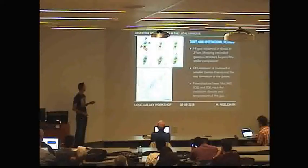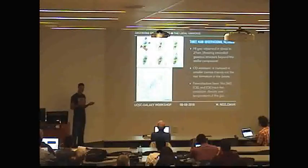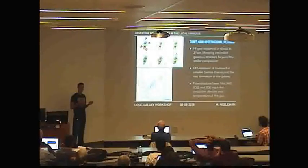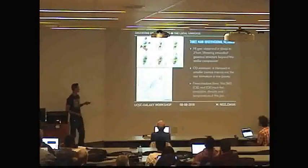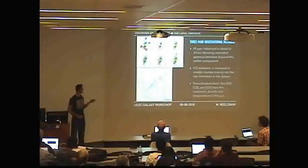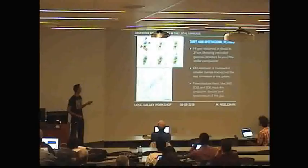A third method of looking at gas in low-redshift galaxies is using fine structure lines — things like nitrogen II, carbon II, oxygen I. There's a bunch of these lines.